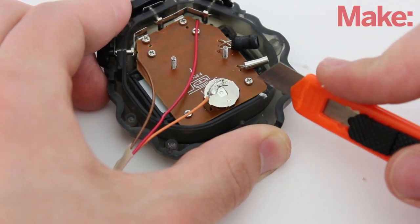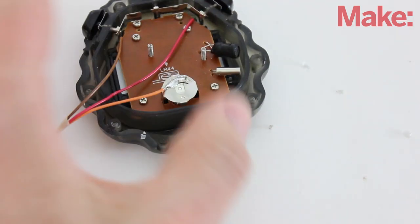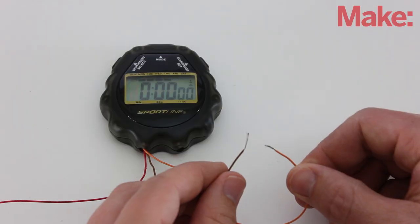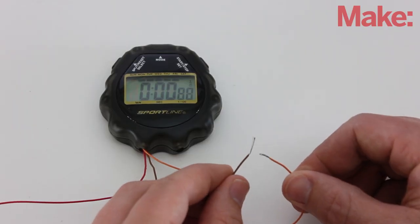Next, I cut a small slot in the side of the housing that I could run the wires through. You can now reassemble the stopwatch. These wires will let us activate the stopwatch remotely.